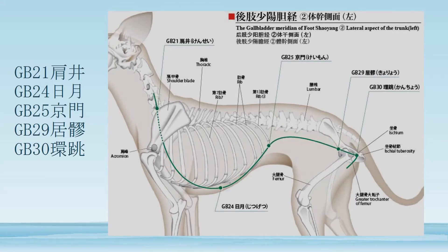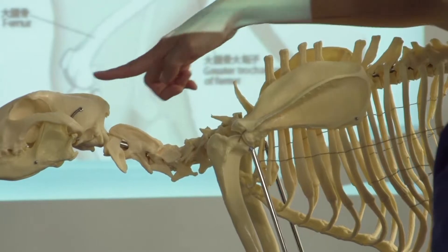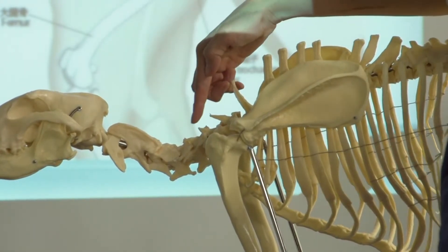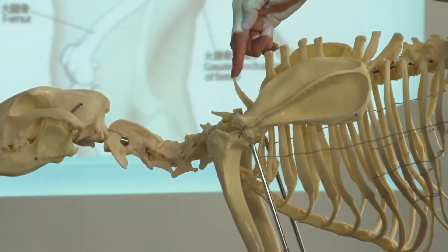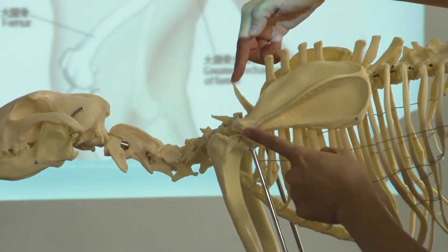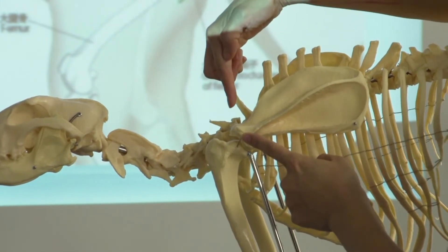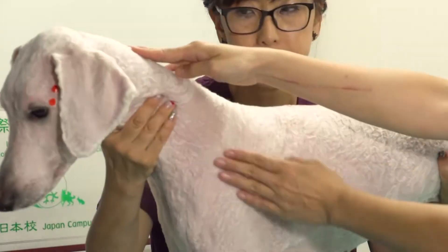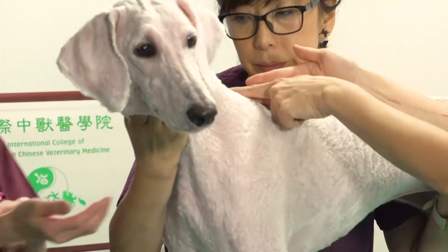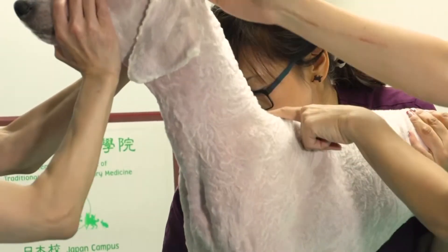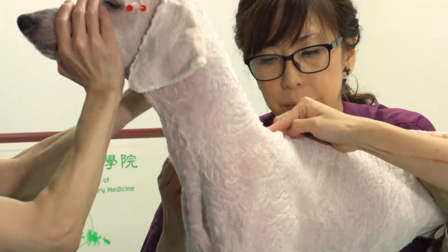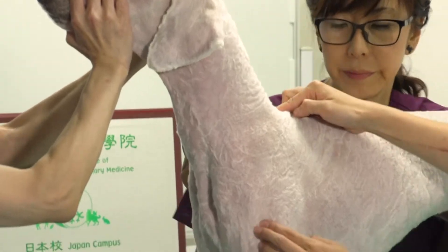GB21 is at the midpoint on the line connecting the spinous process of the 7th cervical vertebra and the acromion.